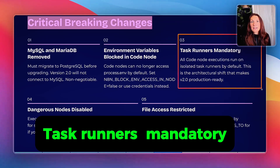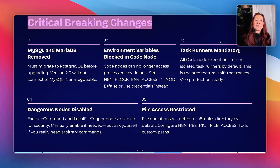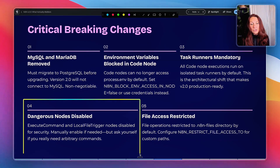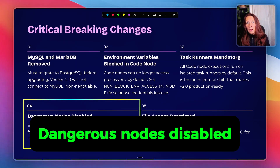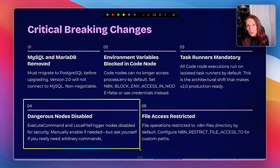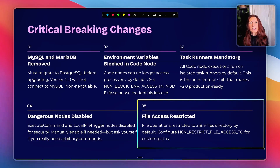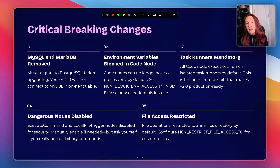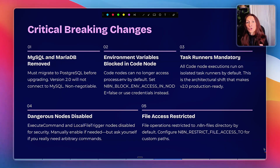Third, task runners are mandatory. All code node executions now run on isolated task runners by default — this is the architecture shift mentioned earlier and what makes V2 production-ready. Fourth, dangerous code nodes are disabled. Execute command and local file trigger nodes are disabled for security. If you need them, manually enable them in your configuration, but ask yourself: do you really need to run arbitrary commands on your server? Fifth, file access is restricted. By default, file operations are restricted to the .n8n files directory. If your workflow accesses files elsewhere, configure N8N_RESTRICT_FILE_ACCESS_TO with your desired path.